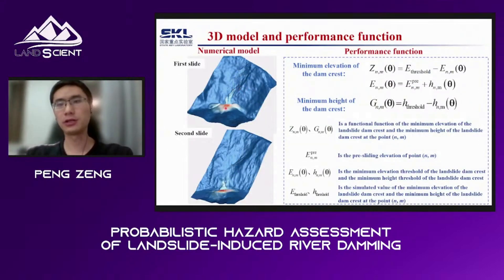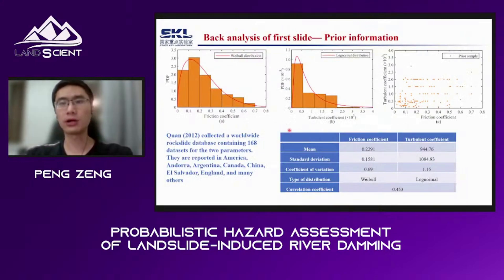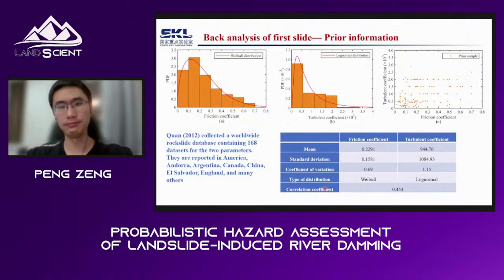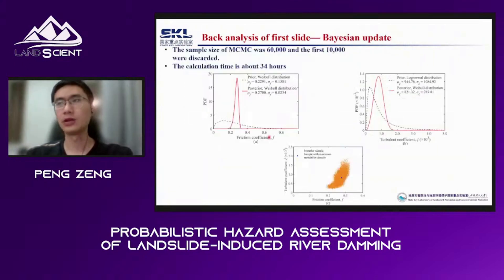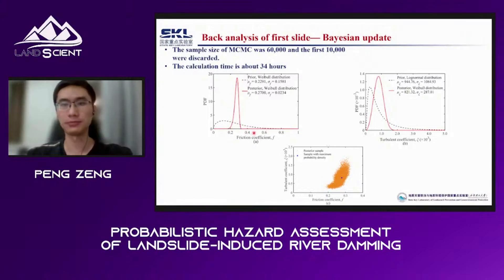This is the three-dimensional numerical model for the two slides and their performance functions respectively. The prior information of random variables is collected from a worldwide database. We compute their means, standard deviations, distribution types, and correlation coefficients. We take the first slide as observation; seven observation points are selected, located on the border of the deposition area. Using Bayesian back-analysis, the random variables are updated. We can see that the means are shifted and the standard deviations are reduced.